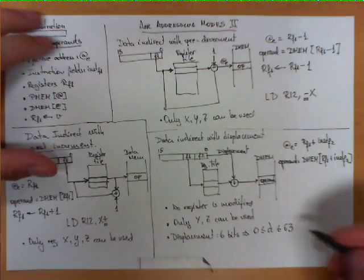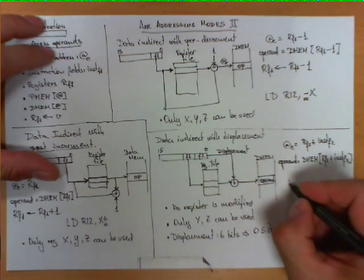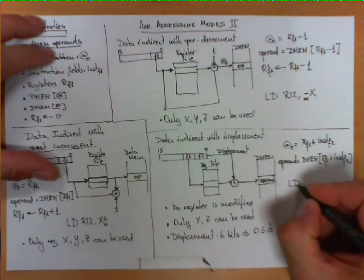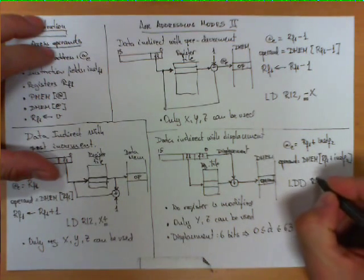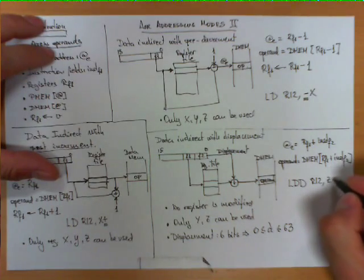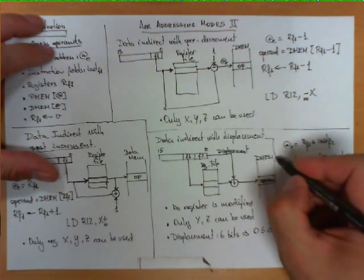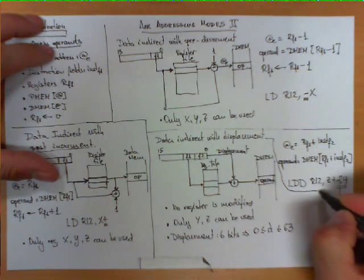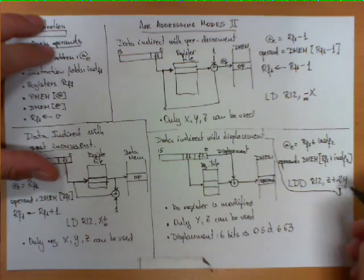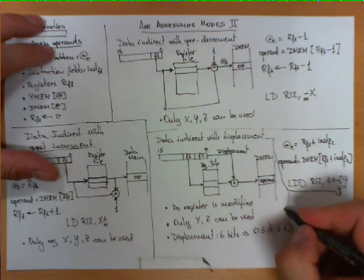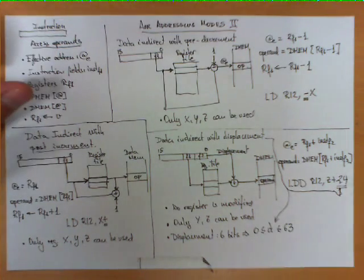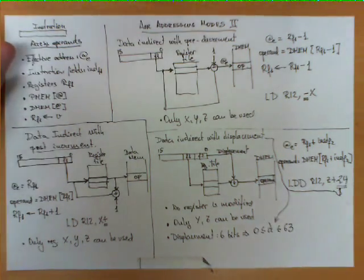An example of an instruction using this addressing mode would be LDD R12, Z+24. The constant 24 here is the displacement, and it must satisfy the constraint of being in the range from 0 to 63.